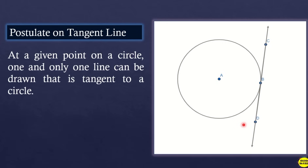Postulate on tangent line: at a given point on a circle, one and only one line can be drawn that is tangent to the circle. To illustrate, consider circle A. As you can see in the illustration, since we have circle A, point B is the point of tangency, meaning there is only one line that can be drawn — and that is the tangent line on the circle.